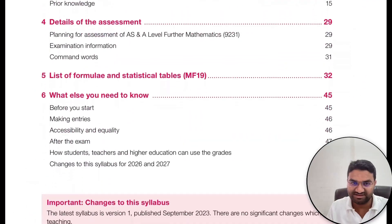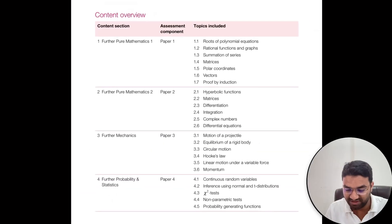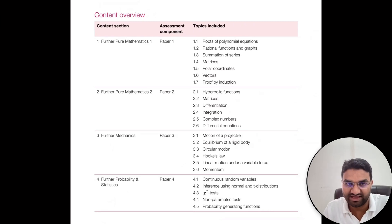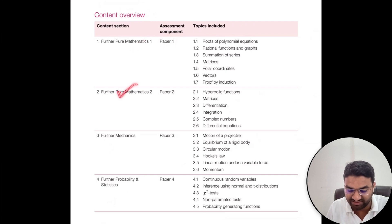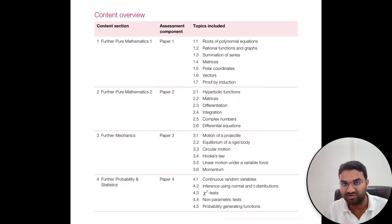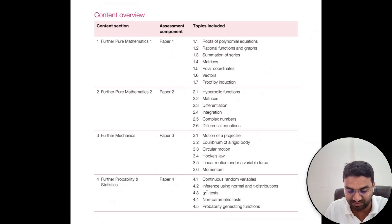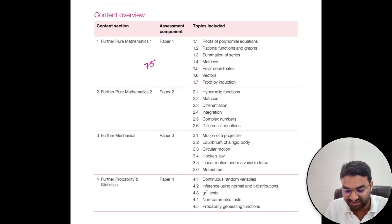Our regular classes and batches are going on. If you want to connect with us, I have left the description box for further math. You will be having four papers. Paper one is Further Pure Mathematics 1, paper two is Further Pure Mathematics 2, paper three is Mechanics, and paper four is Probability and Statistics. Paper one has seven topics and is worth 75 marks, and paper two is also 75 marks.